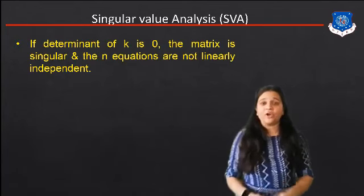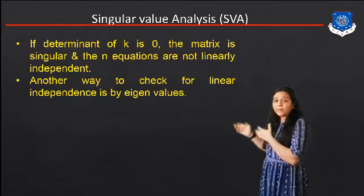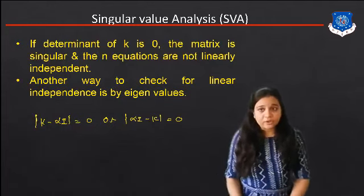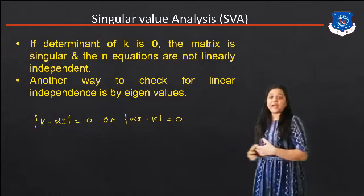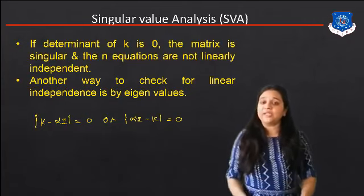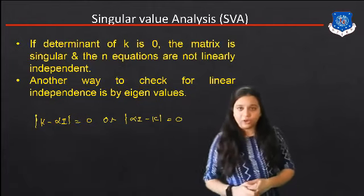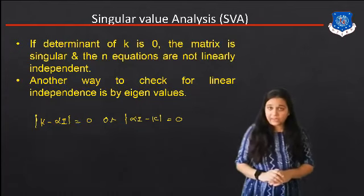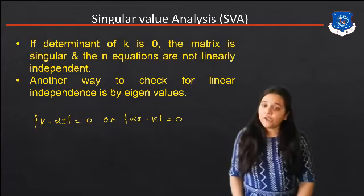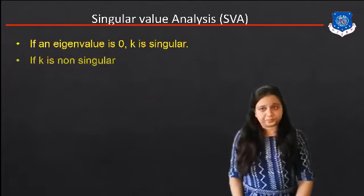If the determinant of K is zero, the matrix is singular and the N equations are not linearly independent. Another way to check for linear independence is by using the eigenvalue equation: mode of K minus Alpha I equals zero, or Alpha I minus K equals zero. So we have two things to check: if determinant of K is zero, that matrix is singular; or we find the eigenvalue using the equation mode of K minus Alpha I equals zero.